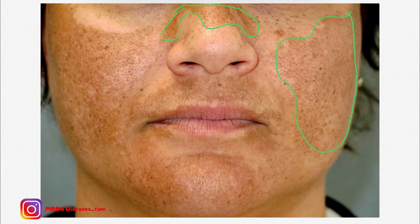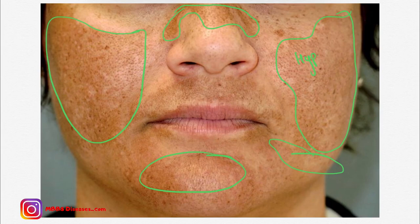Coming to the image part, as you can see in this image, this is an image of melasma. You can see central hyperpigmented lesions here. You can also see the maxillary lesions and the mandibular lesions here. These are hyperpigmented lesions present on the face.